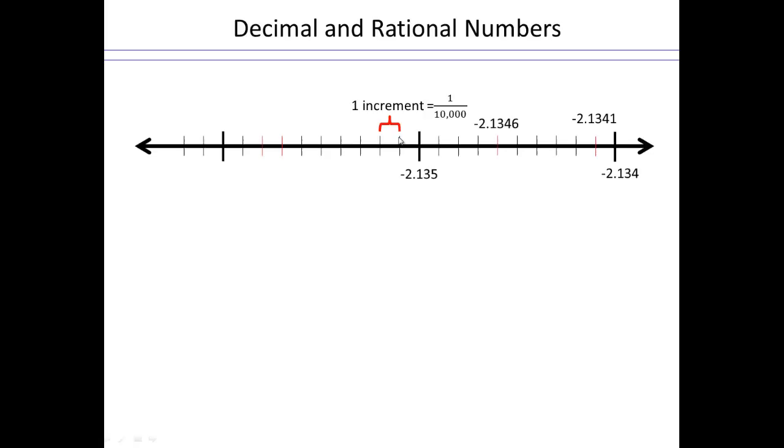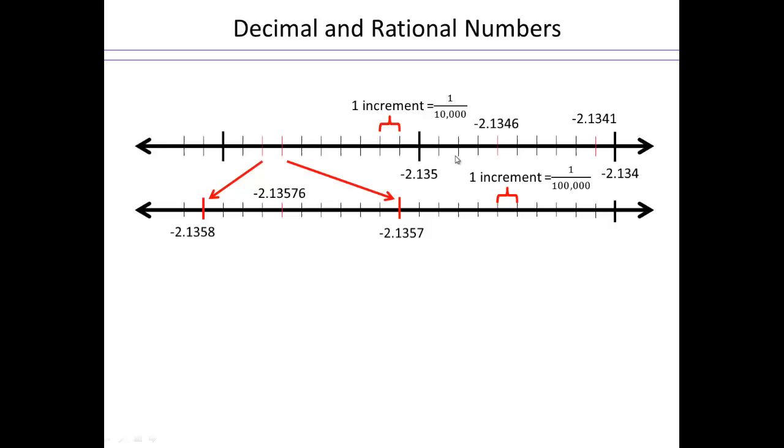So this tick mark here, this is negative 2.135. This would be 5.1, 5.2, 5.3, 5.4, 5.6, 5.7, 5.8. Once you have that, you can expand and have 10 more tick marks and then plot numbers and figure it out that way.